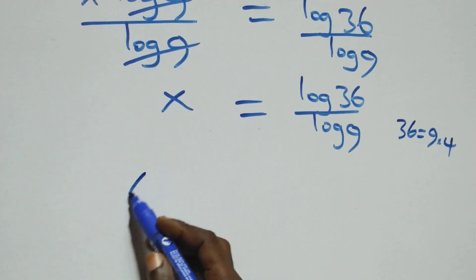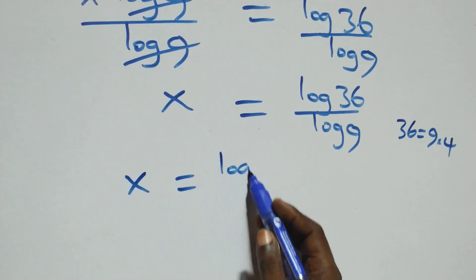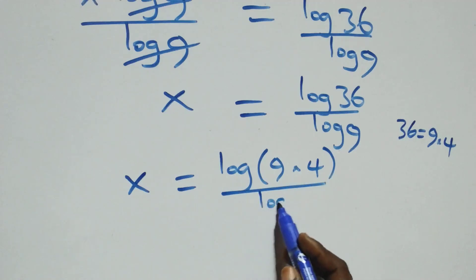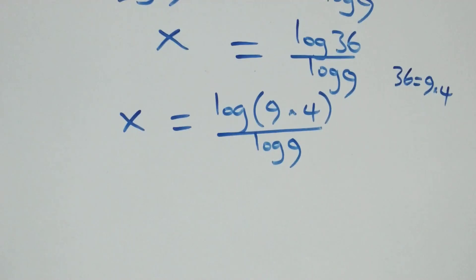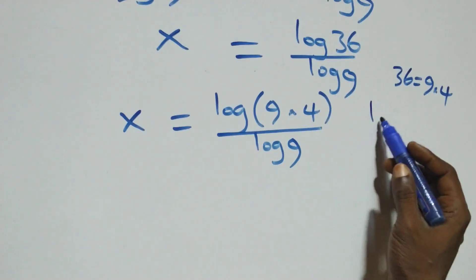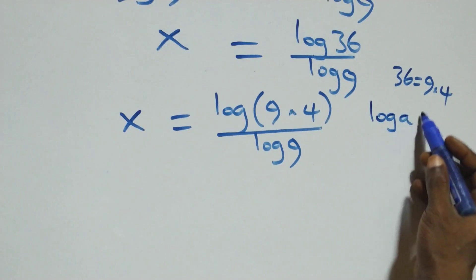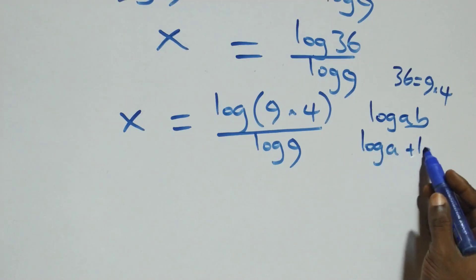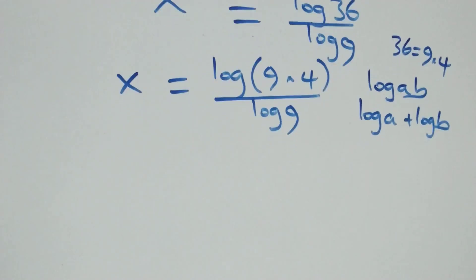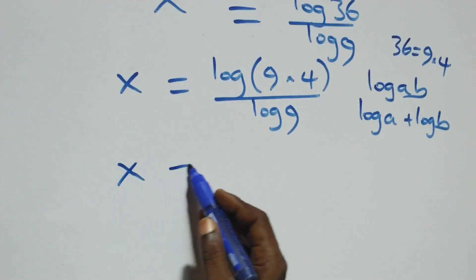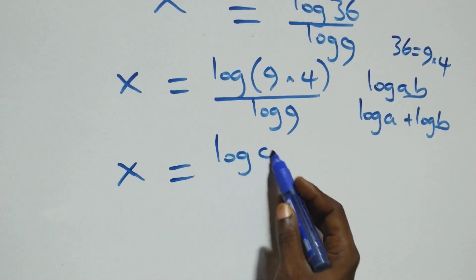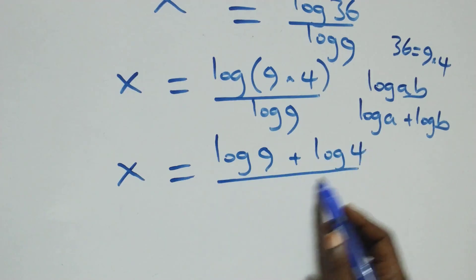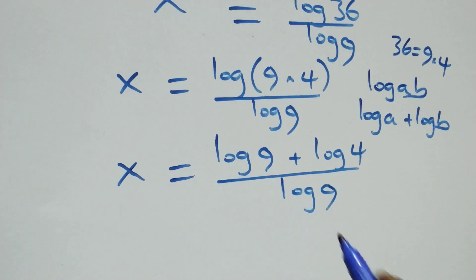So we have x equals log(9 × 4) over log 9. Then, applying the law of logarithms — log(a × b) equals log a plus log b — this becomes x equals (log 9 + log 4) over log 9.